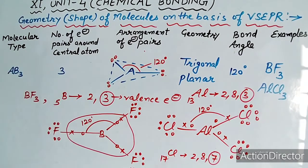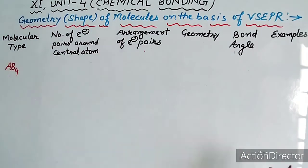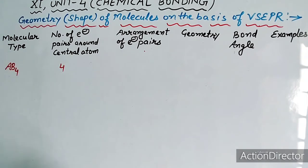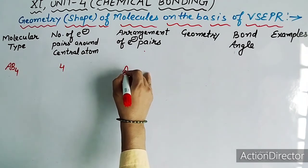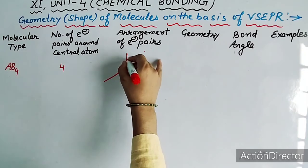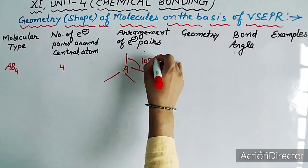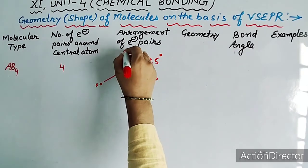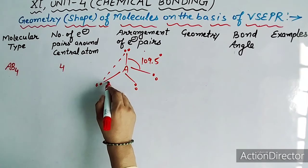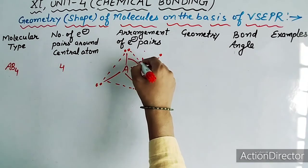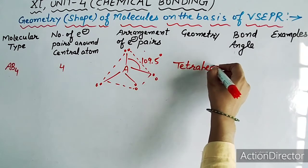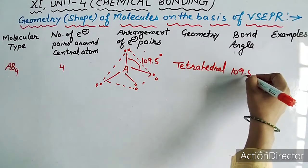अब third type AB4 discuss करते हैं — central atom A की surrounding में 4 bond pairs of electrons। यहाँ पर angle of separation nearly 109.5 degree होता है — first, second, third, और fourth electron pair इस तरह geometrically arrange होते हैं कि जो shape बनती है वो tetrahedral होती है, with bond angle of 109.5 degree।